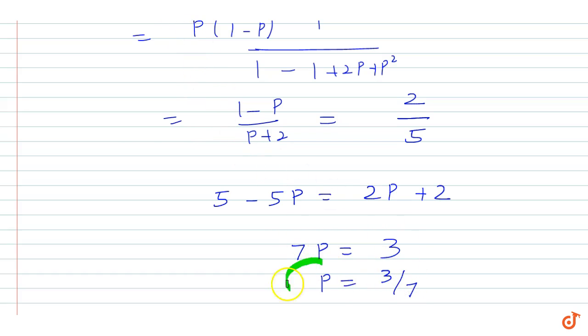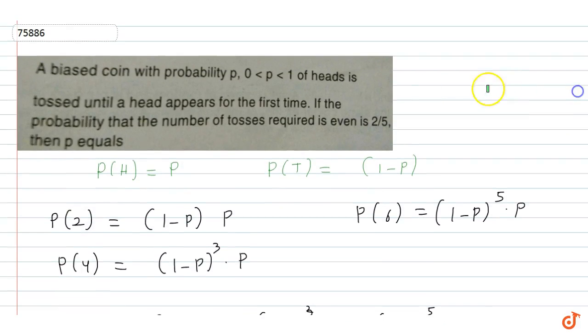So answer for this question is equal to 3 by 7. P ki value, p is equal to 3 by 7.